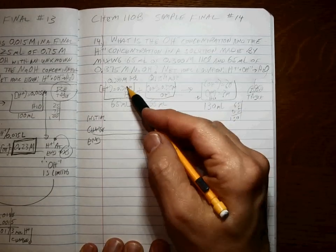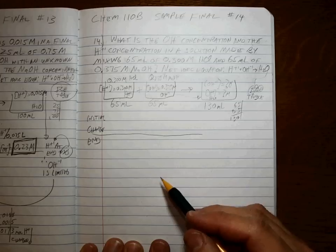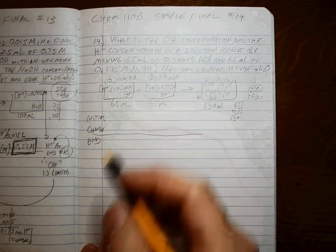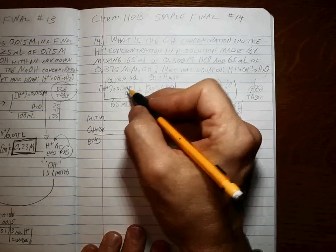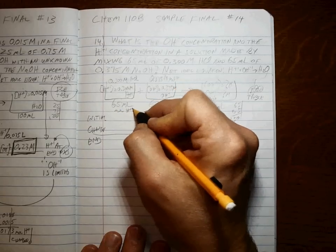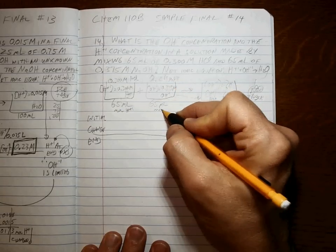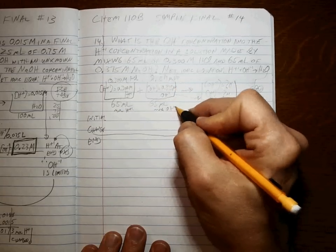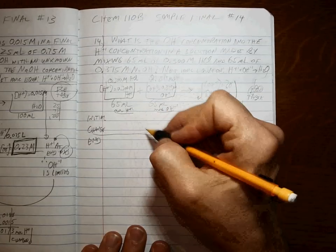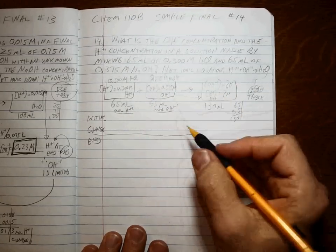Okay, every time you have a concentration and a volume, you're going to calculate moles. We can do that twice to find the initial moles of H-plus and the initial moles of hydroxide.